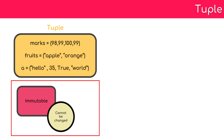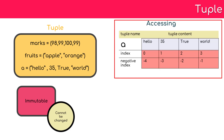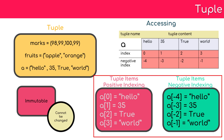Tuples are immutable, which means once you create a tuple you cannot change its contents. Similar to a list, you can access individual items in a tuple using the index number. Index numbers start from 0 and go up to the total number of items in the tuple. Tuples also support negative numbering, which starts at minus one from the last item and goes to the first item. Accessing tuple items is similar to how you access list items.